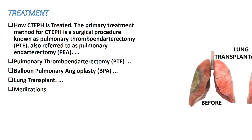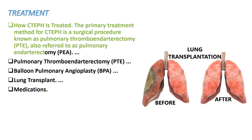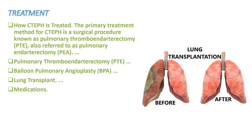Treatment: The primary treatment method for CTEPH is a surgical procedure known as pulmonary thromboendarterectomy (PTE), also referred to as pulmonary endarterectomy. Other treatment options include balloon pulmonary angioplasty (BPA), lung transplant, and medications.